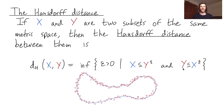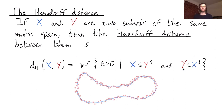Let x and y be two subsets of the same metric space. Here x is drawn in blue — it's this curve. Y is drawn in red — it's this finite set of points sampled near the curve. They're both in the same metric space, which here is just the plane.